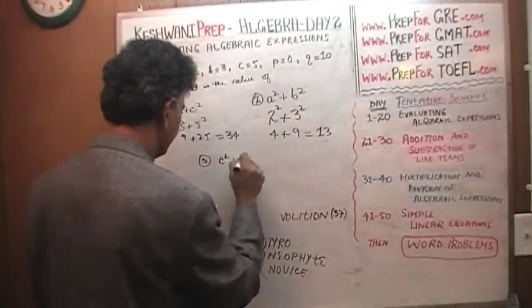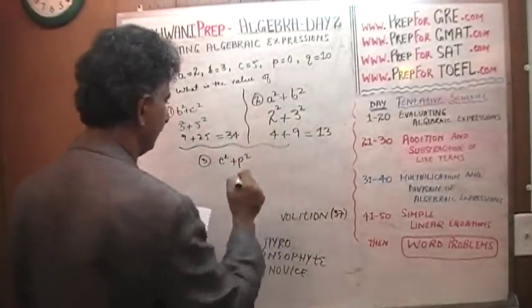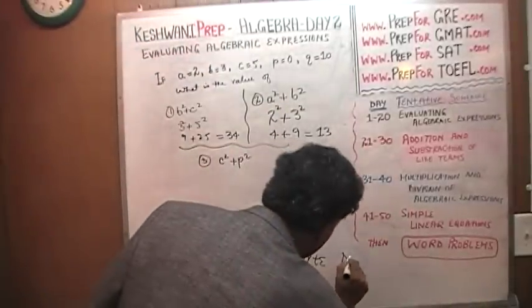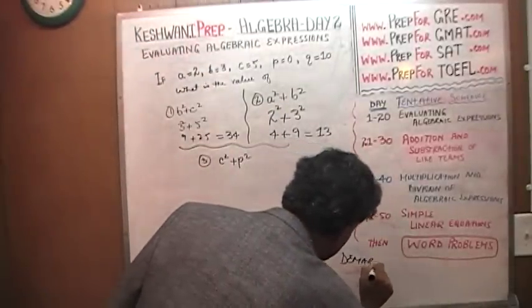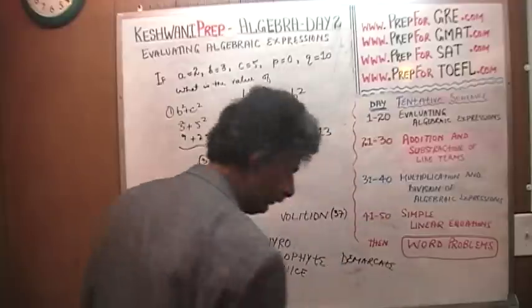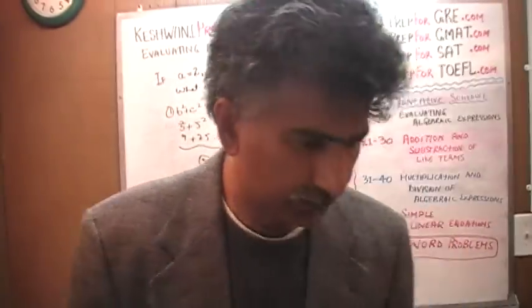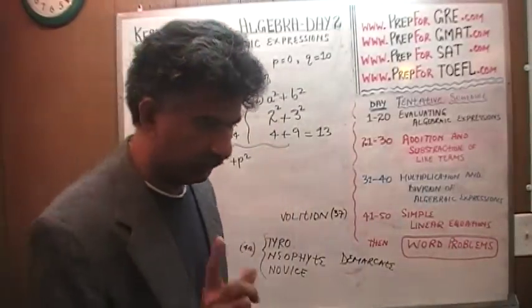Number 3: c squared plus p squared. Let's put a demarcation.